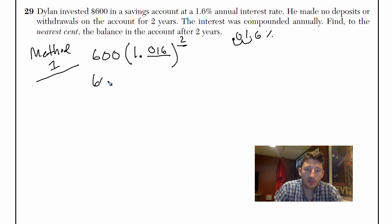So your equation is 600, 1.016. We're doing that two years. Okay. So let's figure out what that is.